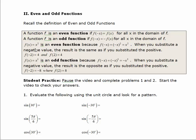As an example, f of x equals x squared: if we take negative x and replace it with x and square it, we get the original function back, so x squared is an even function. F of x equals x cubed is an odd function because when I replace x with negative x, I get the complete opposite back — I get negative x cubed.